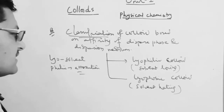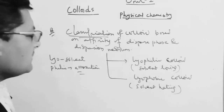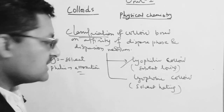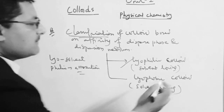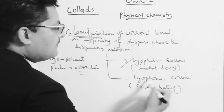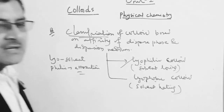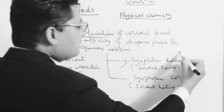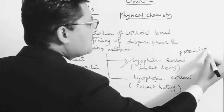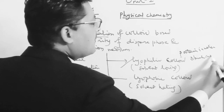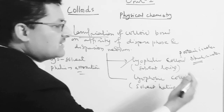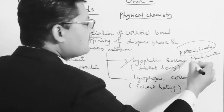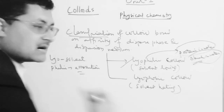We can use a lot of soluble interactions. For example, protein in water — in protein, there are OH and NH2 groups, so there is a hydrogen bond with water. This is the lyophilic type of attraction, called the water-attracting type.